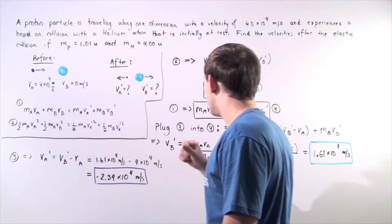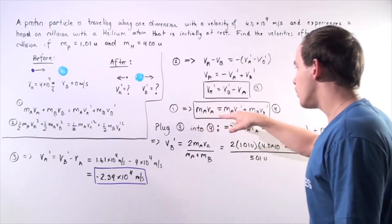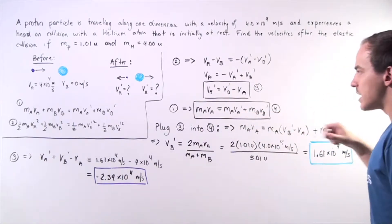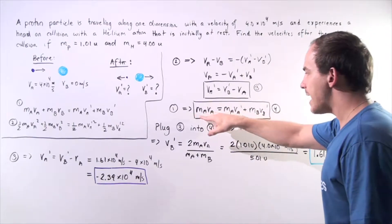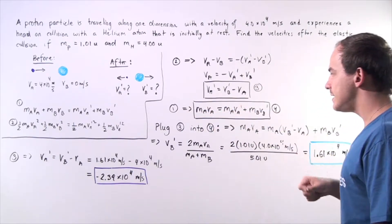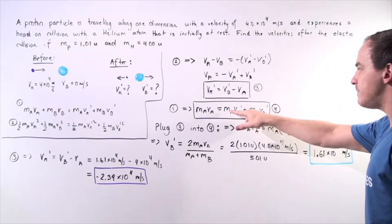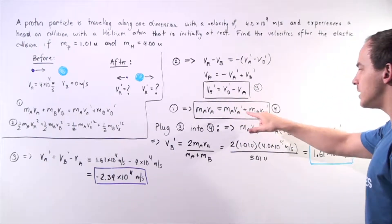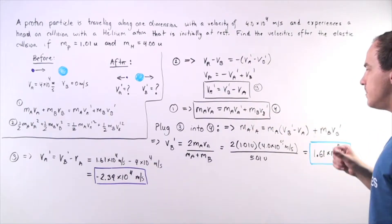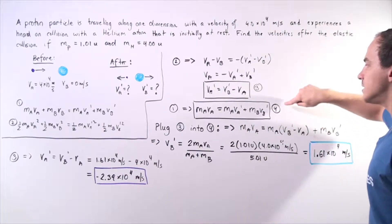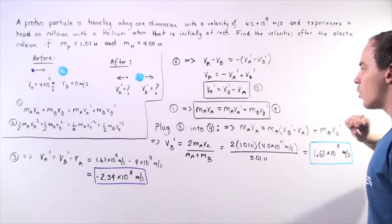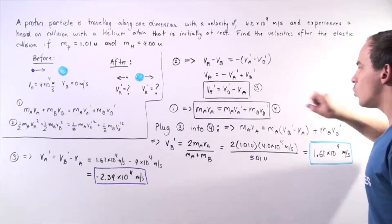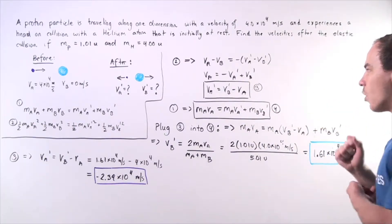Taking the conservation of momentum equation, since Vb is 0 the Mb·Vb term goes to zero, and we are left with: Ma·Va equals Ma·Va' plus Mb·Vb'. Let's label this equation 4.